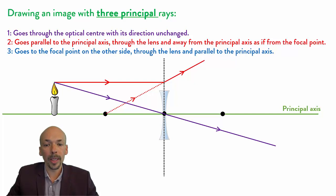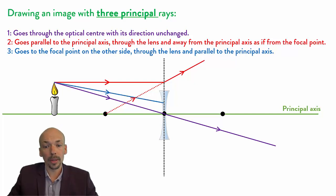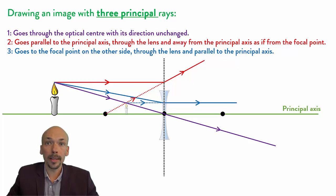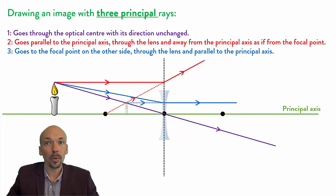Now it will go as if from the focus on the left side. The third principal ray will go to the focus on the other side and then parallel to the principal axis. To determine the image, we have to draw this one back and we can see that the image is here. So with a smaller lens, the image is at the same position. And remember, with principal rays, you are allowed to make the lens a bit bigger if needed.